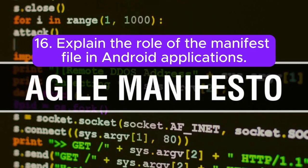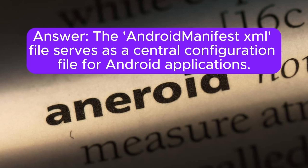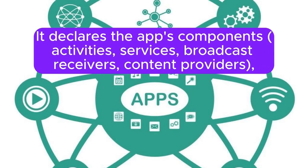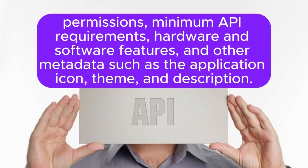Question 16: Explain the role of the manifest file in Android applications. The AndroidManifest.xml file serves as a central configuration file for Android applications. It declares the app's components — activities, services, broadcast receivers, content providers — as well as permissions, minimum API requirements, hardware and software features, and other metadata such as the application icon, theme, and description.